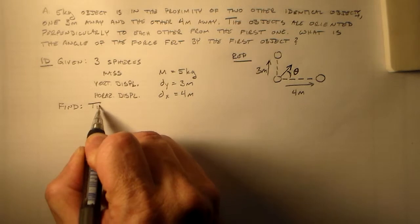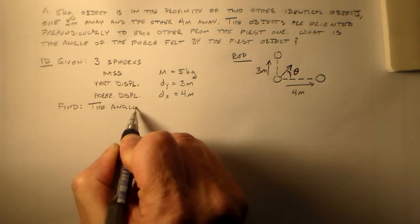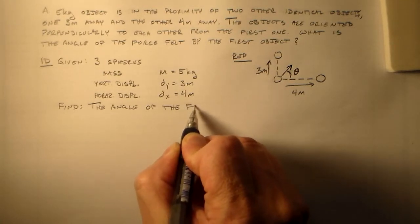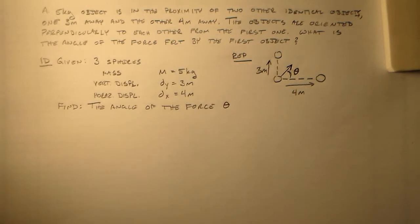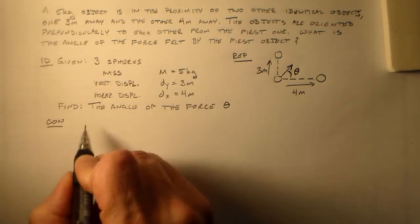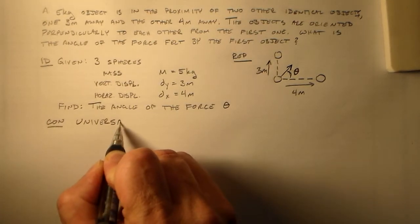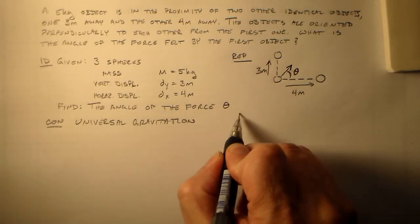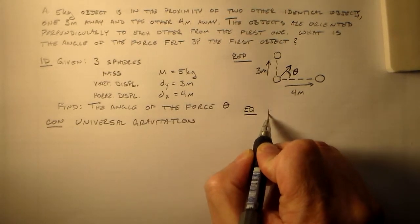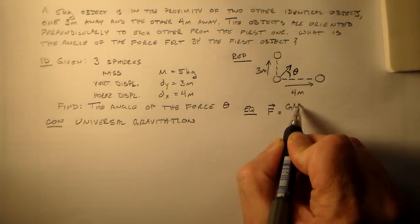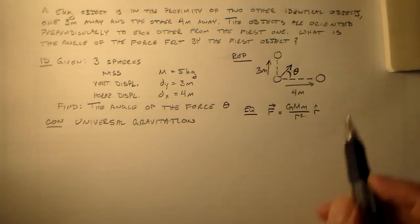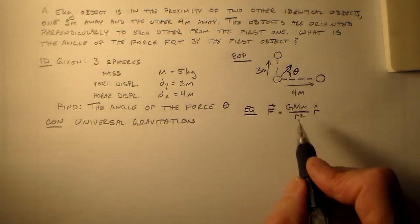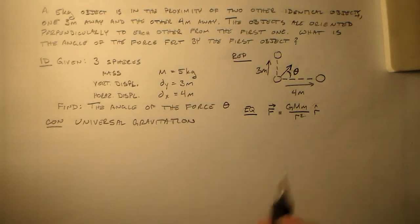All right. And I want to find the angle of the force. And I just called that theta here. So what should I use as a concept? Well, this is a gravitation problem, I said. So my concept will be universal gravitation. And that has the equation F is equal to GMM over R squared R. So this is the direction of the radius vector, this is the distance here.